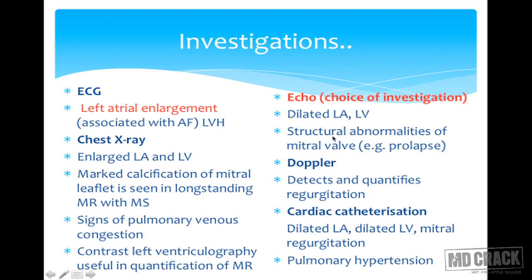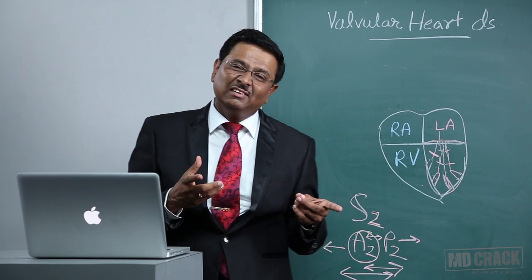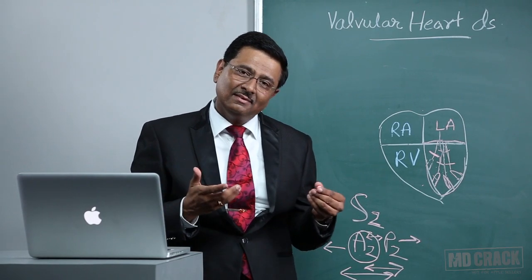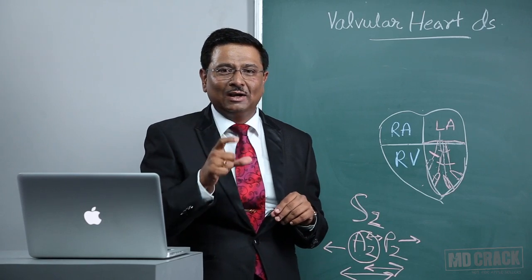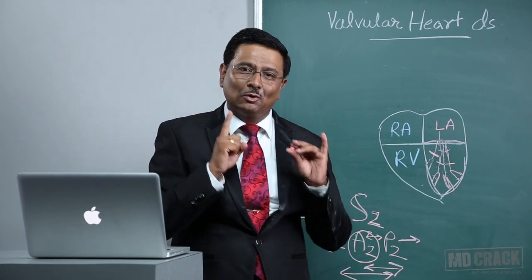Echocardiography can also identify structural abnormalities of the mitral valve such as mitral valve prolapse, and Doppler can detect and quantify regurgitation. On cardiac catheterization, you can see dilated left atrium, dilated left ventricle, mitral regurgitation, and pulmonary hypertension. The choice of investigation remains echocardiography — whenever you see echocardiography in an MCQ option, that is the right answer.